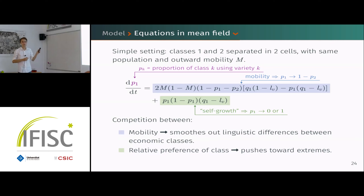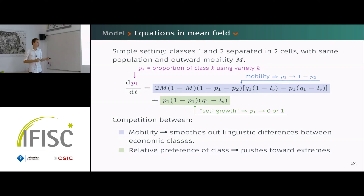The self-growth term in green pushes people toward completely using one variety or the other. When the overt prestige is very low, everyone ends up speaking variety one; when it's very high, everyone speaks variety two; and for values in between, the two classes use their two varieties, with class one speaking variety one somewhat more because they prefer it.